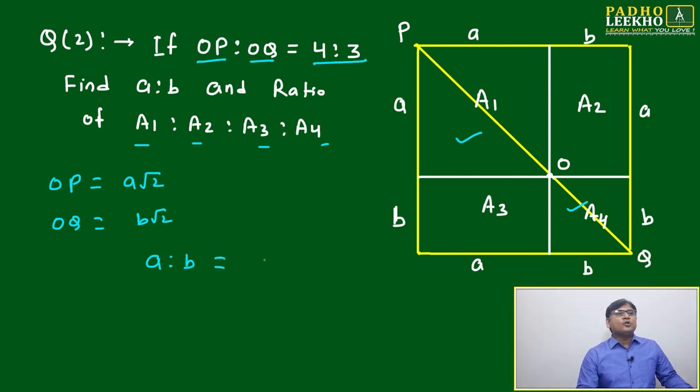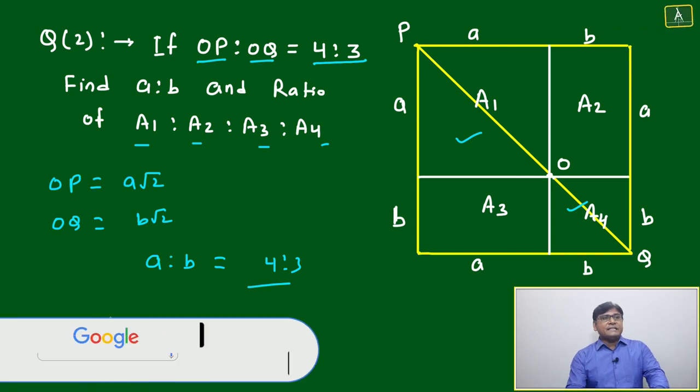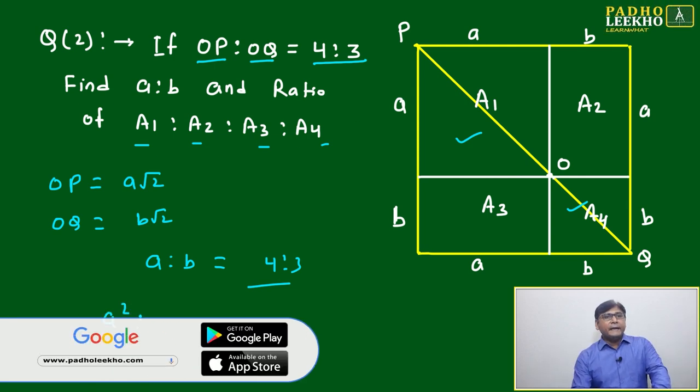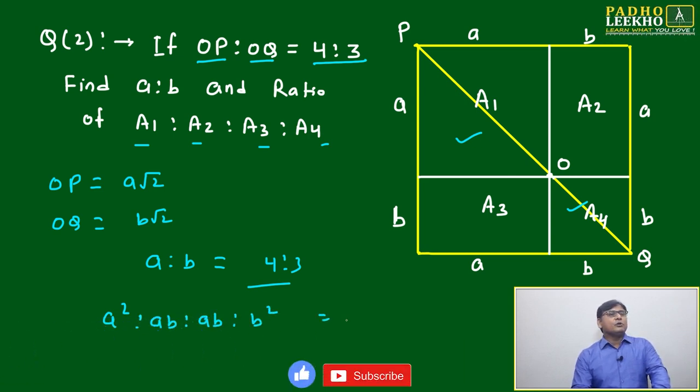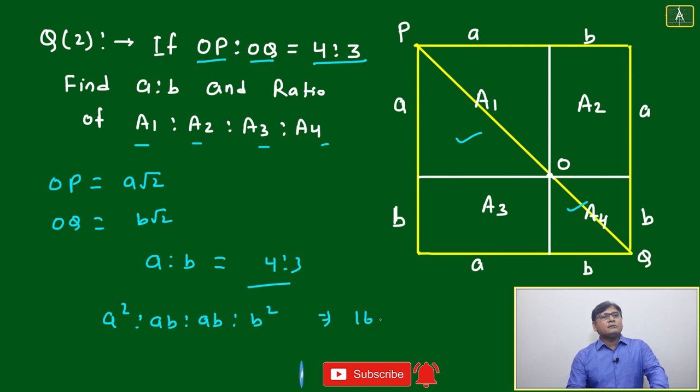Means we can say the ratio will not change, it will be 4:3 only. Now ratio of area will change. A1 will equal a², A2 will be ab, A3 will be again ab, and this will equal b².